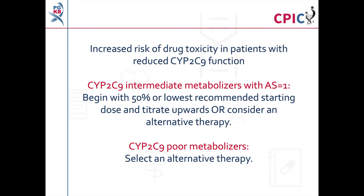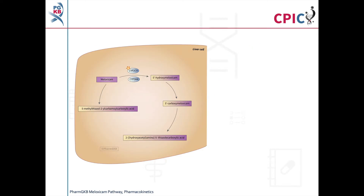Patients with reduced CYP2C9 function are at an increased risk of experiencing drug toxicity due to increased exposure to meloxicam. Because of this, the guideline recommends that patients who are CYP2C9 intermediate metabolisers with an activity score of 1 begin meloxicam therapy with a 50% dose reduction before titrating upwards. Use of an alternative therapy can also be considered. Selection of an alternative therapy is recommended for patients who are CYP2C9 poor metabolisers. This is the PharmGKB meloxicam pathway; a link is provided in the description below.